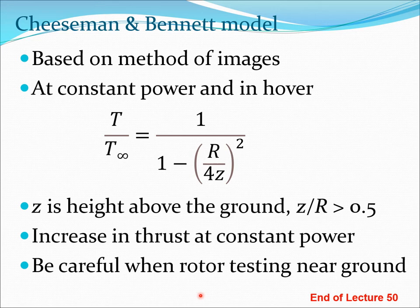There are some models to model ground effect. One of them is the Cheeseman and Bennett model. This model essentially says that at constant power and in hover condition, T/T_infinity equals 1 divided by [1 minus (R/4z)²], where z is the height above the ground. z/R should be greater than 0.5 for this model to be valid.